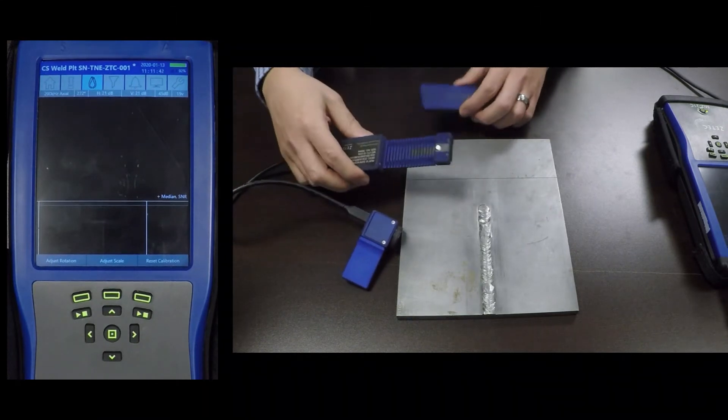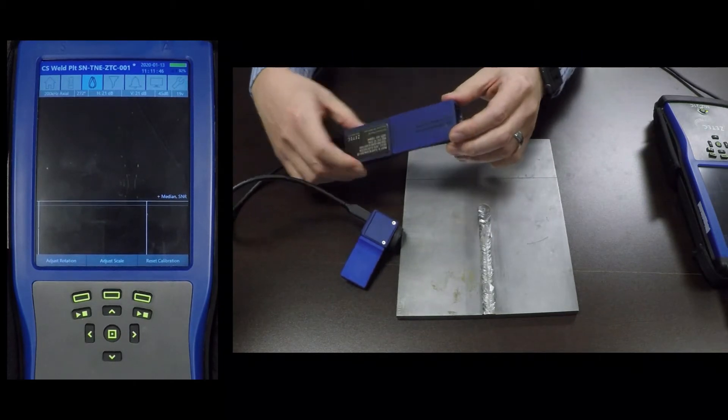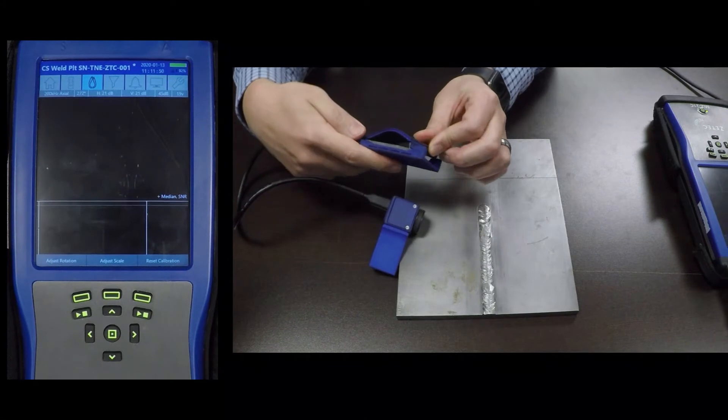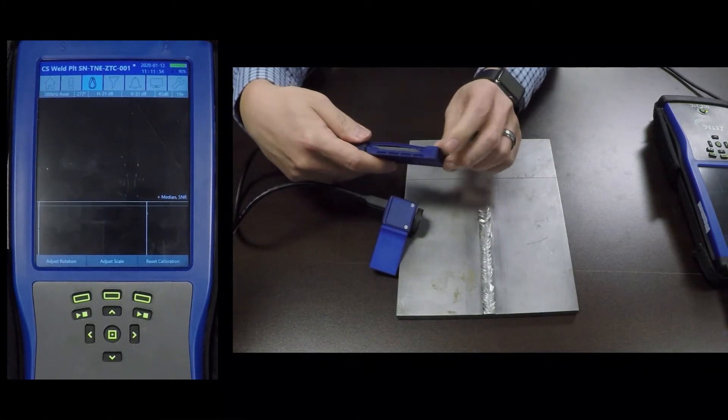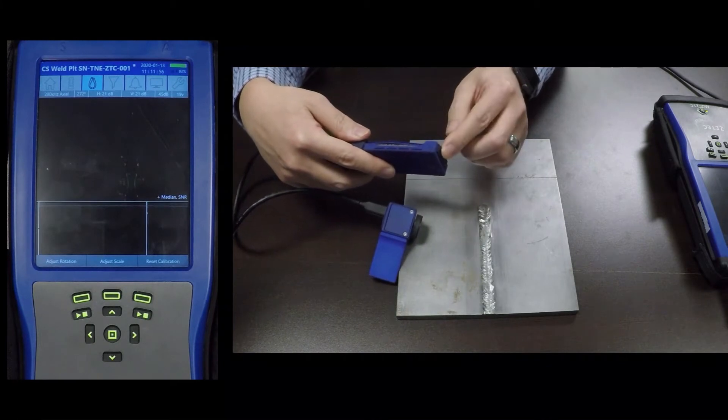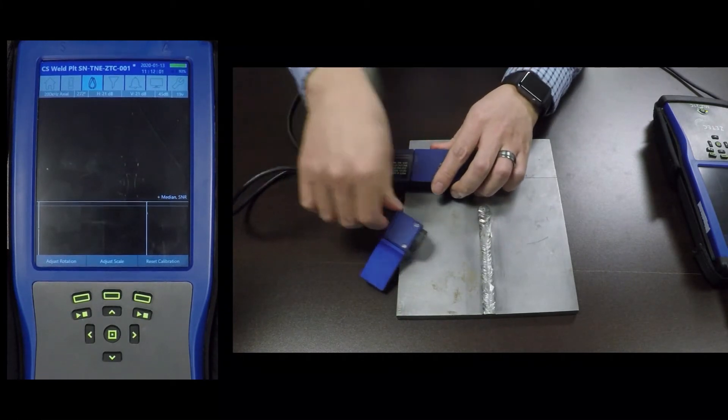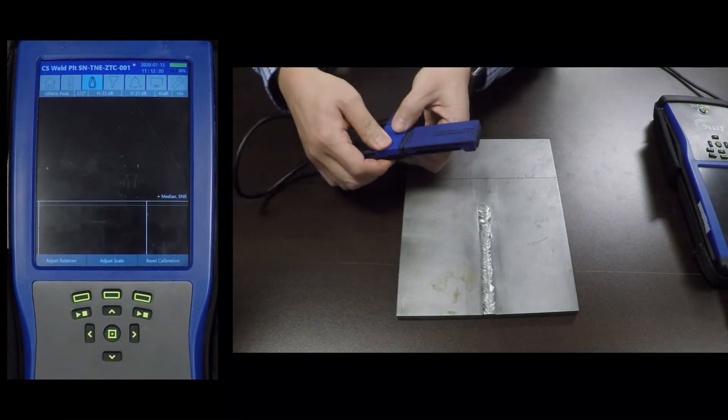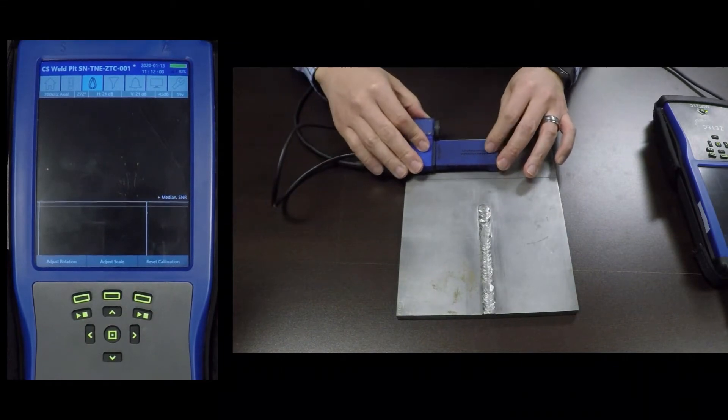Okay, so I'll go ahead and attach this handle to the module like so, and then just insert the plus point part of the probe into the handle. And I will attach the encoder like that. Now I'm ready to scan.